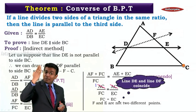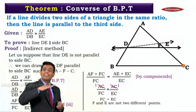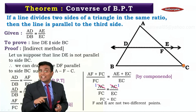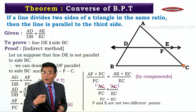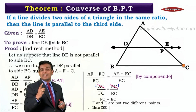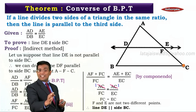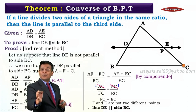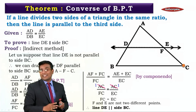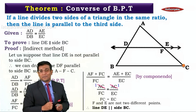Since F and E are the same point, line DF and line DE are not two different lines — they coincide. And if they coincide, we can say that line DE is parallel to side BC, which is exactly what we were supposed to prove. That completes the proof — a very important theorem.